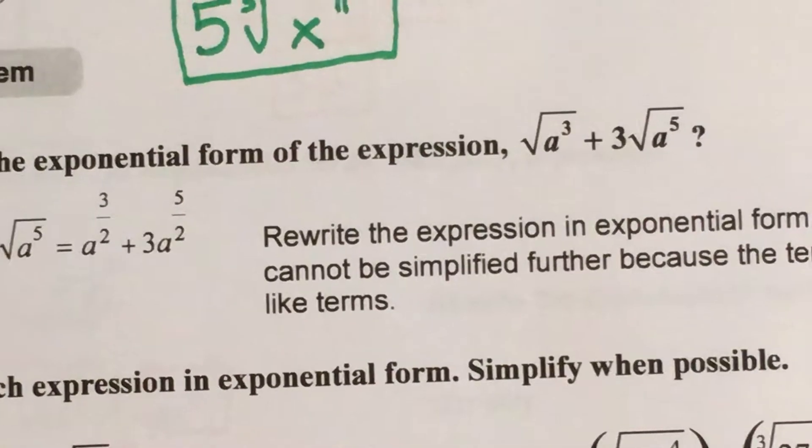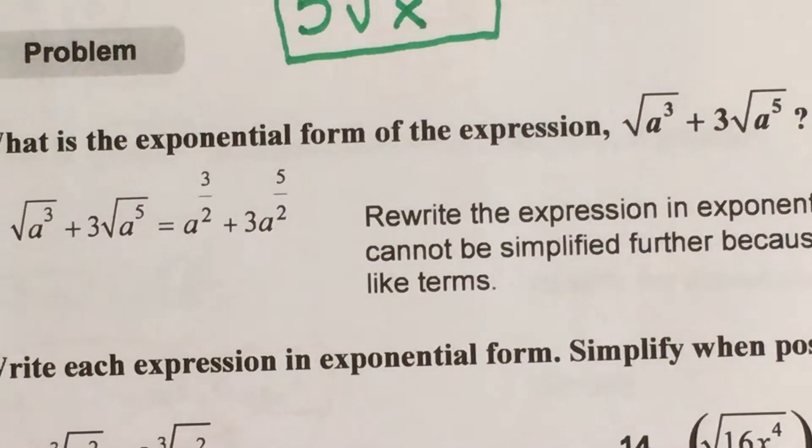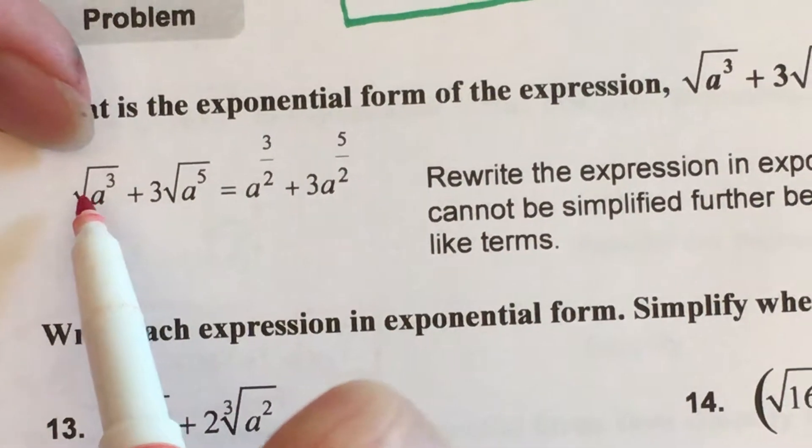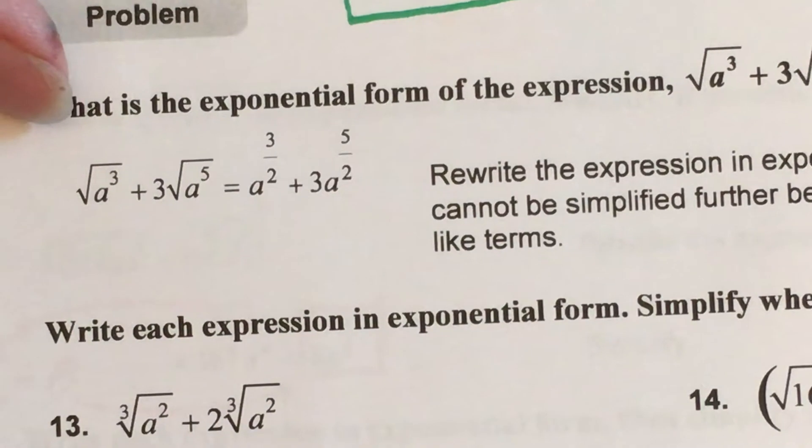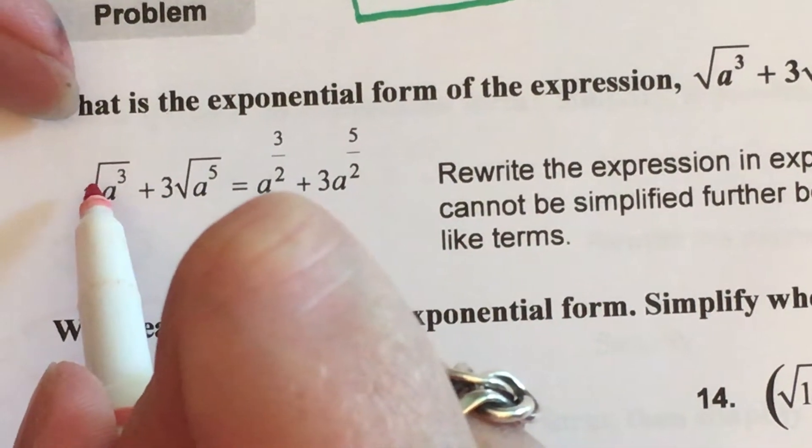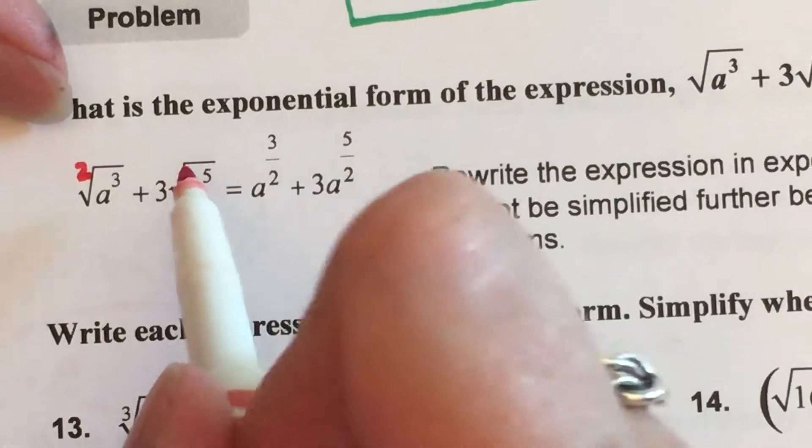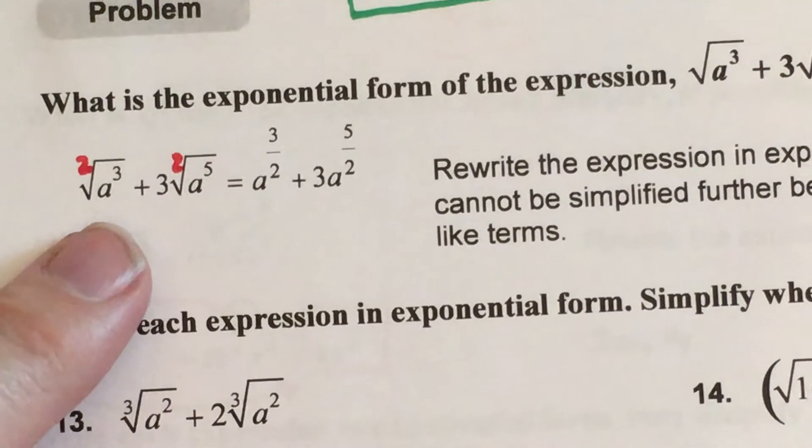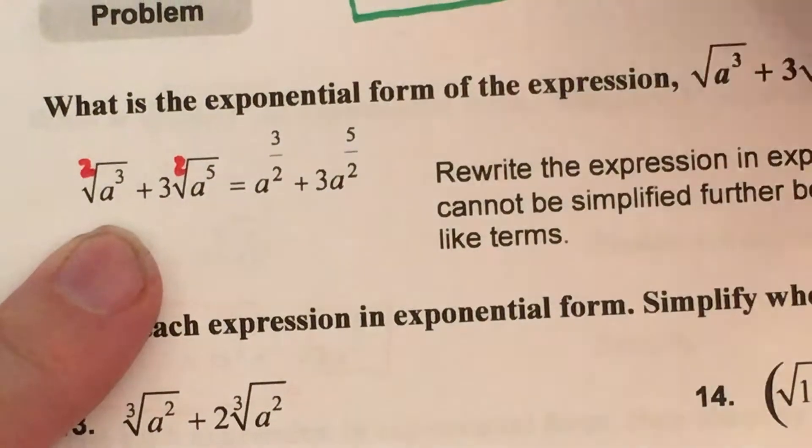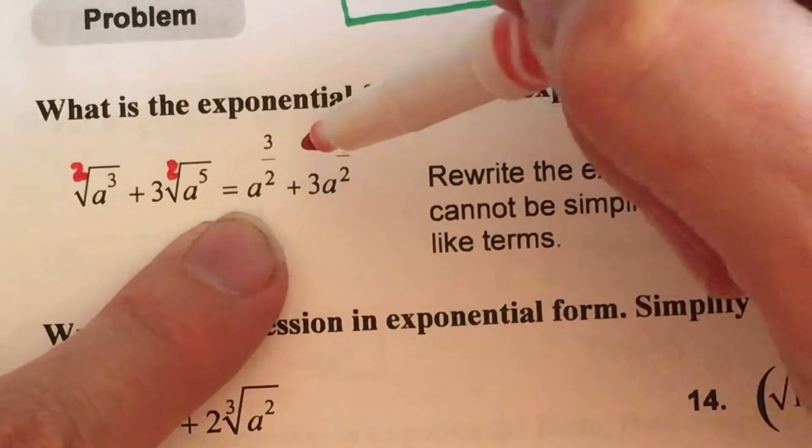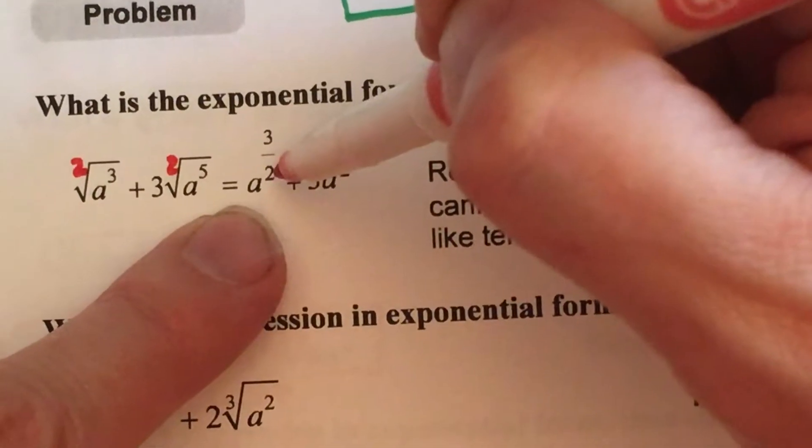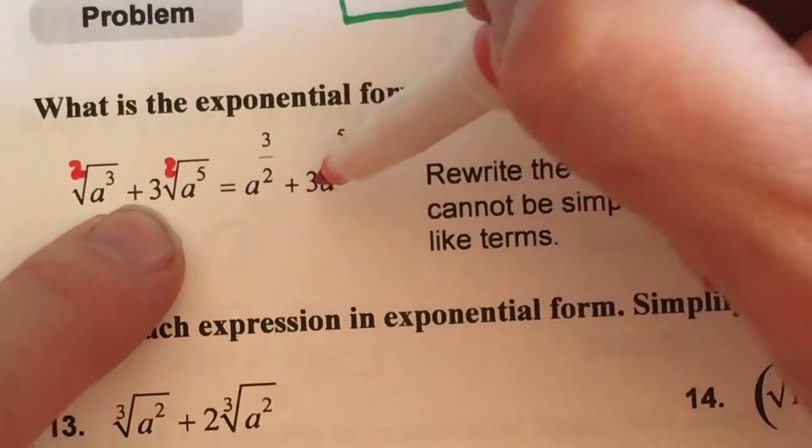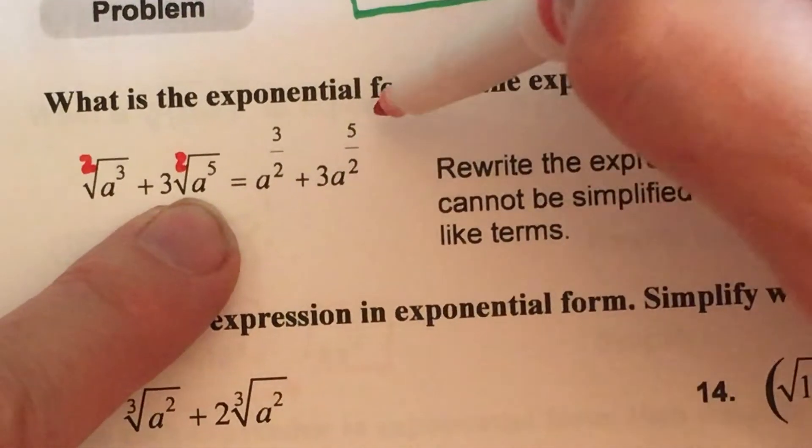Let's see what we have if we can even combine them at all. On this particular problem we know that while there is not a number out here right now, if there's nothing showing what's really there is an assumed 2. So this first term, the square root of a cubed, is really equivalent in the exponential form to a to the 3 halves.